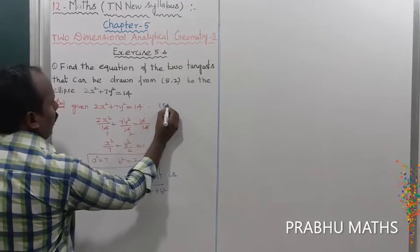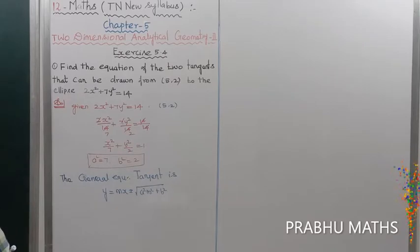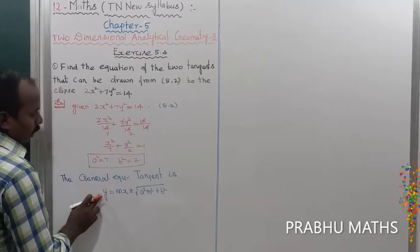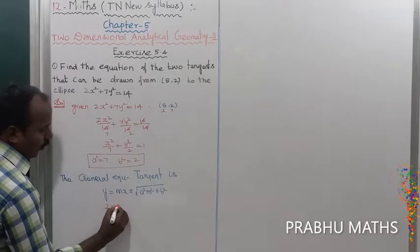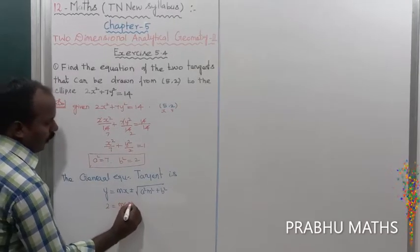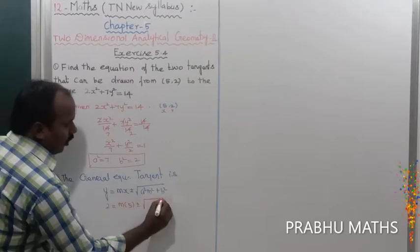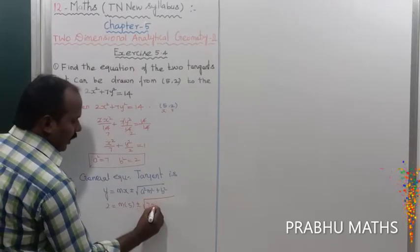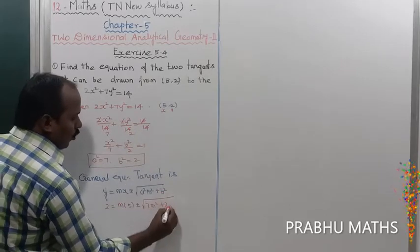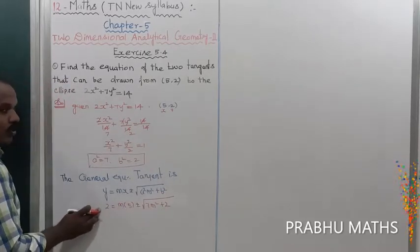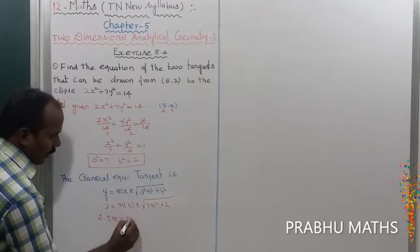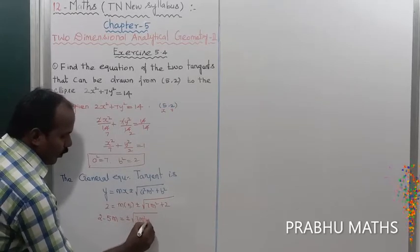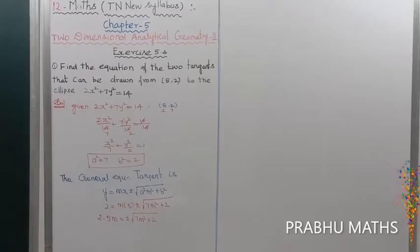The tangent passes through the point (5, 2), so substituting x = 5 and y = 2 into the formula: 2 = 5m ± √(7m² + 2). Moving 5m to the left side gives 2 − 5m = ± √(7m² + 2).